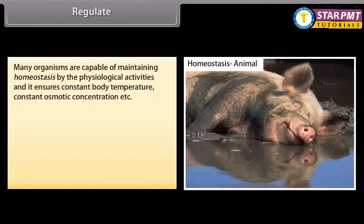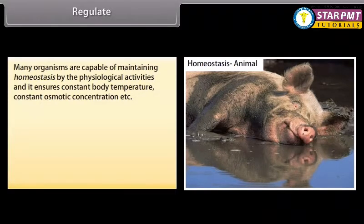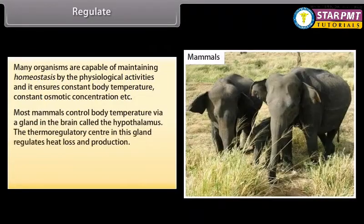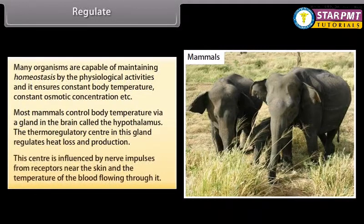Many organisms are capable of maintaining homeostasis through physiological activities, ensuring constant body temperature and constant osmotic concentration. Most mammals control body temperature via a gland in the brain called the hypothalamus — the thermoregulatory center. This gland regulates heat loss and production and is influenced by nerve impulses from receptors near the skin and the temperature of the blood flowing through it.